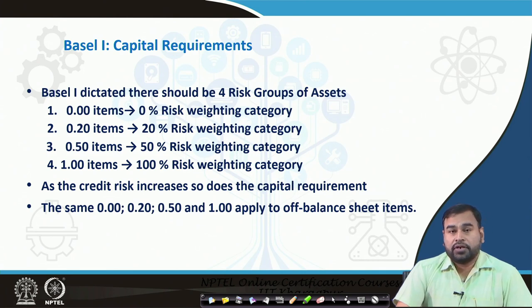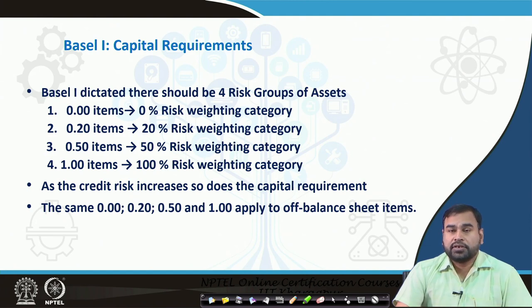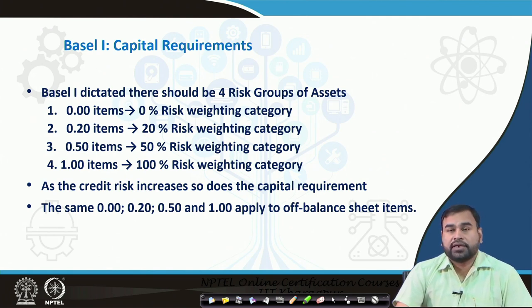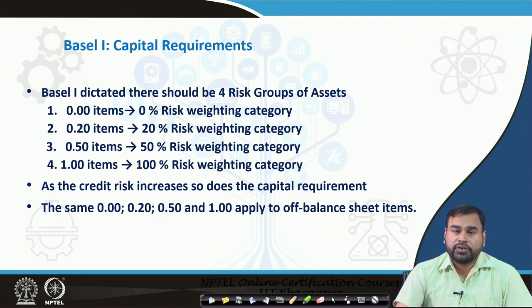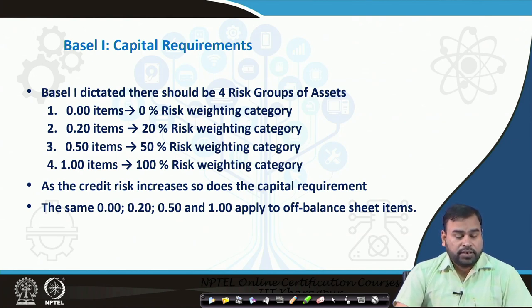The risk weights are given on the basis of credit risk, which is the major risk banks face. Basel defined assets with 0% risk weight, 20% risk weight, 50% risk weight, and 100% risk weight. These are the standard categories Basel recommended, and banks must follow these rules to calculate risk-weighted assets as per Basel 1.